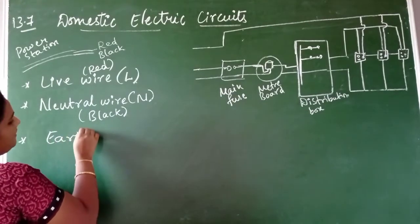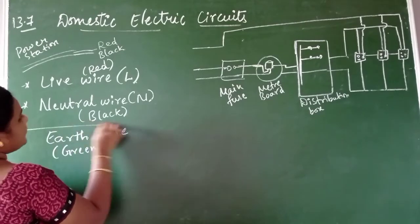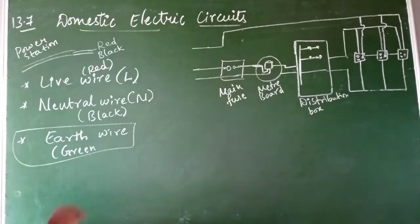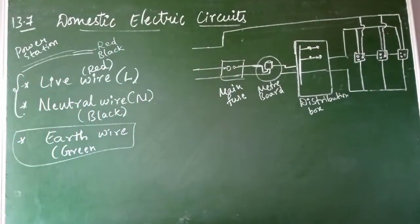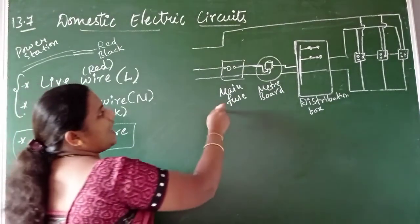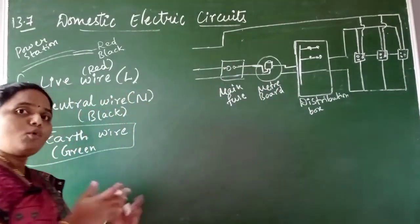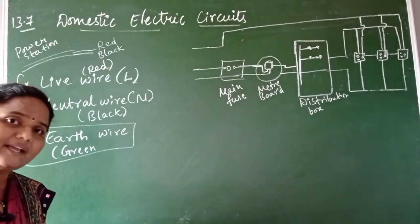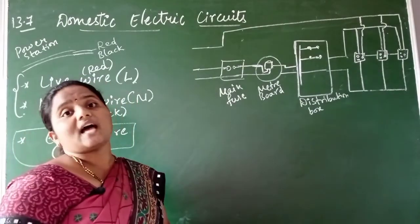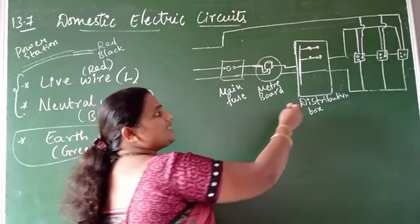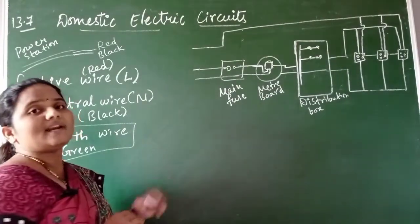There is one more wire called the earth wire, which is green in color. The earth wire does not come from the electric poles, whereas the live wire and neutral wire come through the cable and connect to a board fitted outside our house. This box is called the main fuse. After the main fuse, you get a meter board — also called the electricity meter board — and after that, a distribution box containing different fuses and switches.